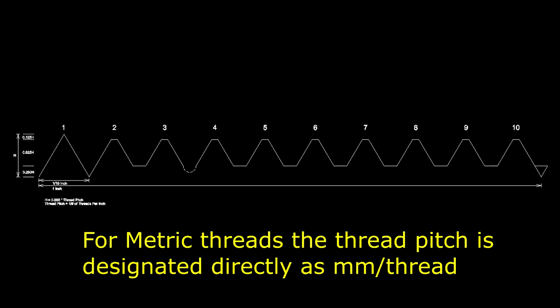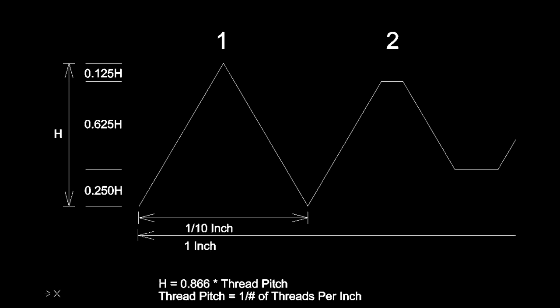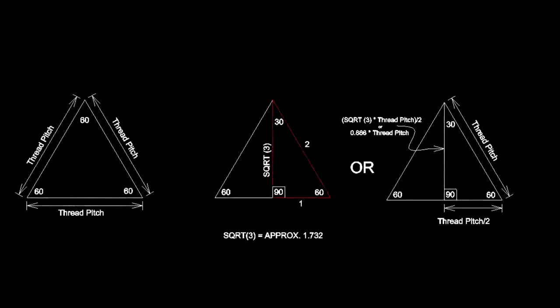The thread pitch is 1/10 or one-tenth of an inch. The 60-degree triangle form is important because that is an equilateral triangle — all sides are equal — and that's useful in calculating the depth you need to penetrate with your tool. The thread itself is only 0.625 of that height; the top gets cut off 0.125 and the bottom gets cut off by a quarter. The thread shape is based on a 60-degree equilateral triangle where all sides equal the thread pitch, giving you a starting point for how deep the tool needs to penetrate.